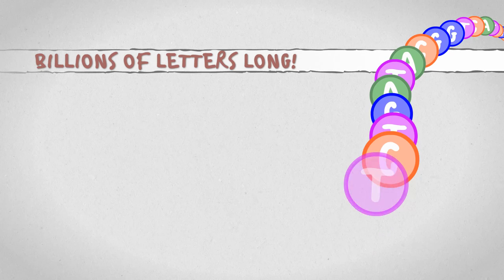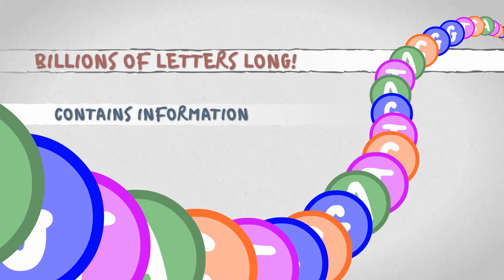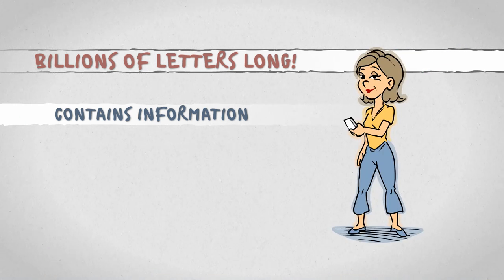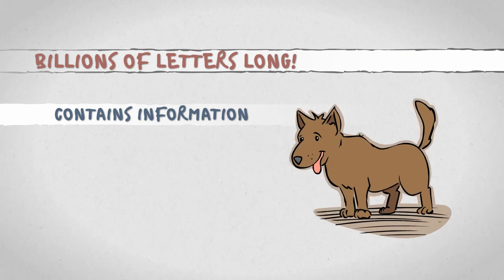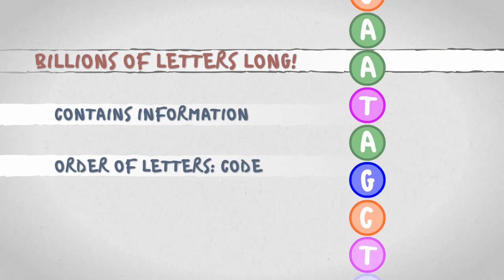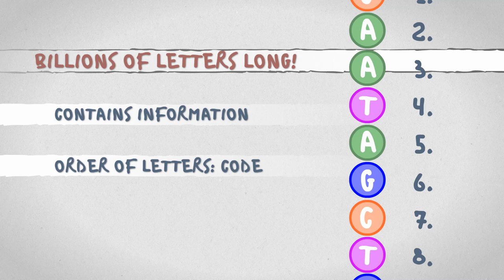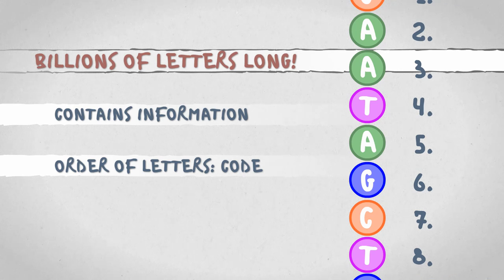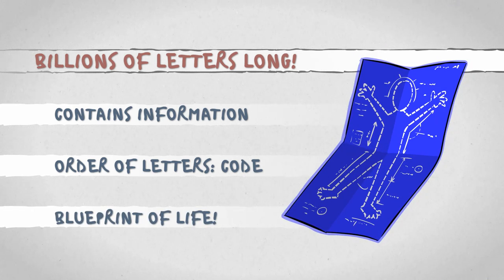Why is it so long? Because it contains all the information necessary to build an insanely complex biological entity: you. Or a pig. Or a dog. Or a cat. Or a bat. Or a whale. Or a tree. The specific order of the different bases is what codes this information and serves as a blueprint for living beings.